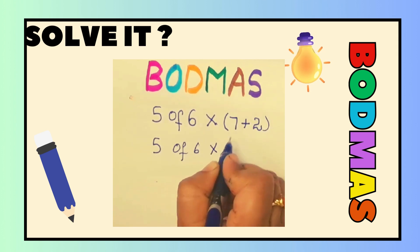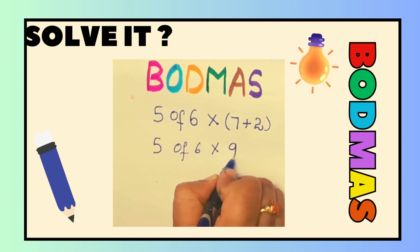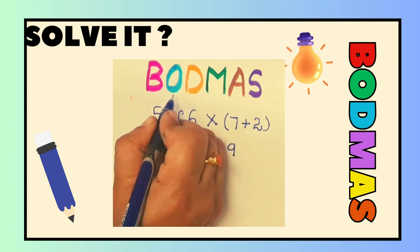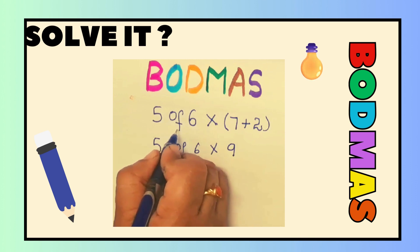So I have 7 plus 2 which will be 9 in the braces. So that is simplified. After B, I have O. O stands for order or exponents or of.